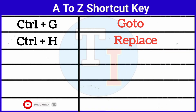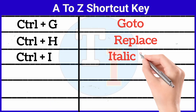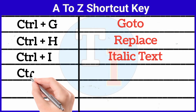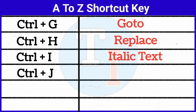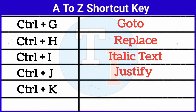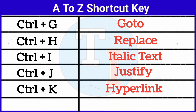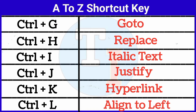Ctrl plus I: italic text. Ctrl plus J: justify. Ctrl plus K: hyperlink. Ctrl plus L: align to left.